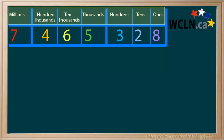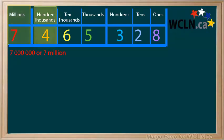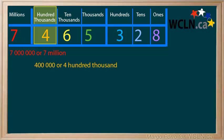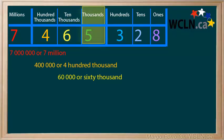Let's start with the largest digit, the millions. The digit 7 is in the millions place, and that gives it a value of 7 million, which can be written with numbers or with words. The digit 4 is in the hundred thousands place, so it has a value of 400,000, and again can be written with numbers or with words. The digit 6 is in the ten thousands place — it is worth six ten thousands, but we would more commonly say it has a value of 60,000. The digit 5 is in the thousands place and has a value of 5,000.